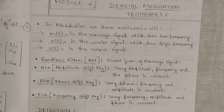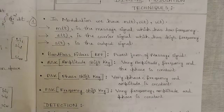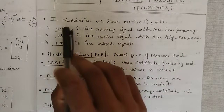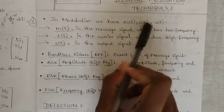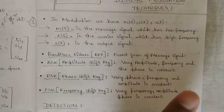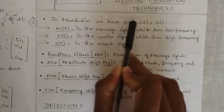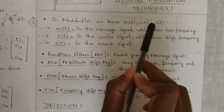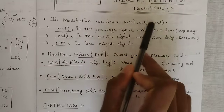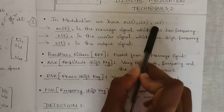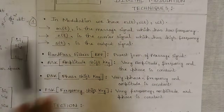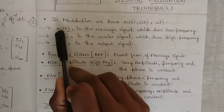In modulation, for a signal to be modulated we need three main components: M(t), C(t), and S(t). M(t) is called the message signal, C(t) is called the carrier signal, and based on the combination of the message and carrier signals, we get the final output signal S(t).